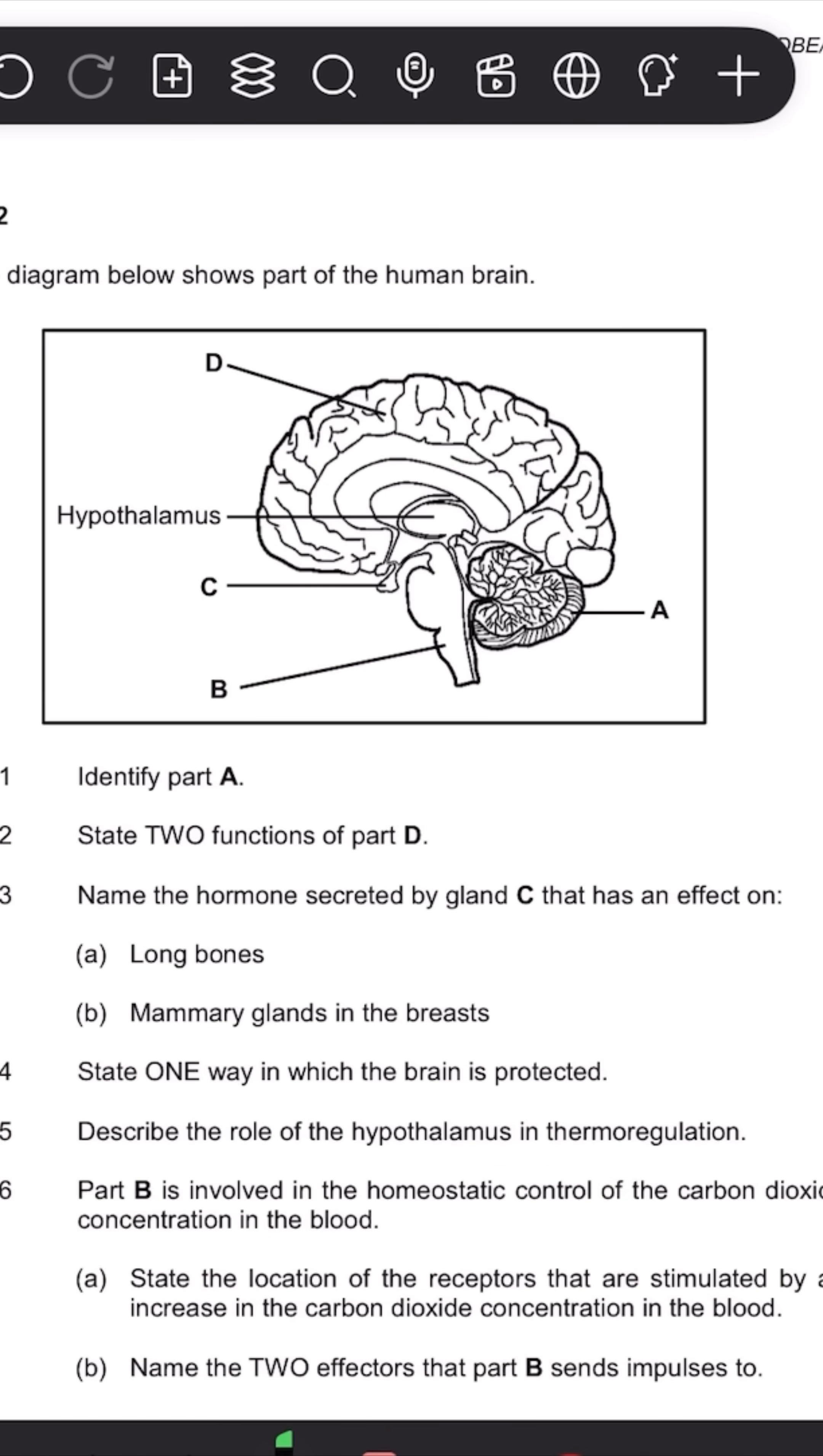So to begin with, we'll read through the question to try to identify how to correctly answer so that we can maximize on our marks. The diagram below shows part of the human brain. So we know it's in the diagram that we have alphabets labeled at different parts. But you're more than welcome before you even start to put in what all these parts mean, because you know that they're going to ask in the question.